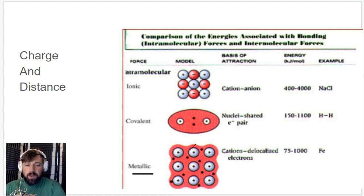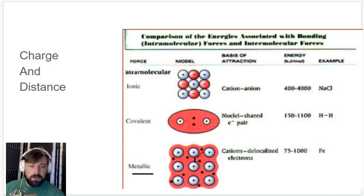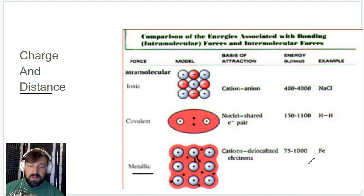For metallic bonds, we have a bunch of cations in a sea of delocalized electrons. The charge difference doesn't really matter because there are always plenty of electrons to compensate for the positive charge. Additionally, the distance between the cations is going to be relatively large since they're both positively charged. So you have a small charge difference and large distance, which is why the bond energy for metallic bonds is quite low.